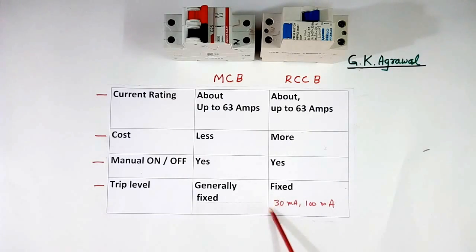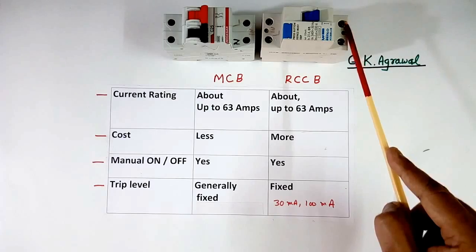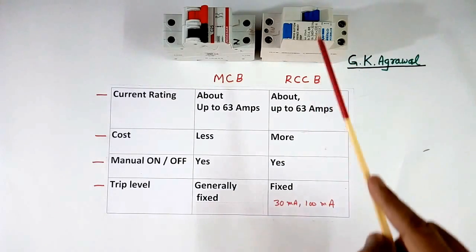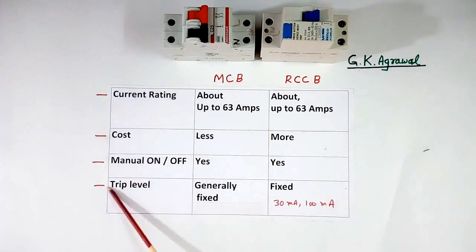This means when current difference between line and neutral becomes more than 30 mA because of earth fault, then this RCCB will trip. But in this case, trip level is defined based on the load current.